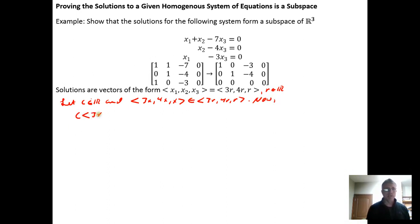So we do C times the vector 3x, 4x, x, which equals, distribute the C into the vector, so we get 3 times C times x, 4 times C times x, and C times x. And this equals the vector that looks like 3r, 4r, r, if we let r equal the real number C times x. And that's all r is, is a real number. And because C and x are both real numbers, C times x is a real number r.